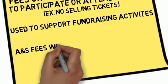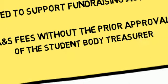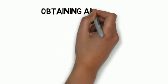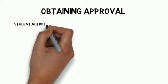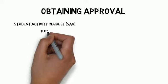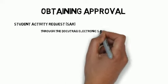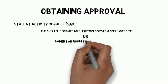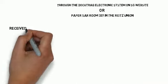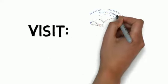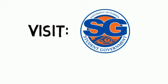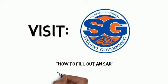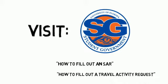Organizations may not expend ANS fees without the prior approval of the student body treasurer. To obtain approval, your organization must submit a student activity request through the DocuTrack electronic system, preferred on the SG website, or in paper at the SAR room in 337 in the Reitz Union. Student activity request forms must be received by SG Finance a minimum of 10 business days before the good or service requested is needed. Complete the online 'How to Fill Out an SAR' training and 'How to Fill Out a Travel Activity Request' training located on the SG Finance website.